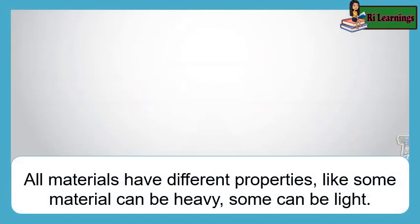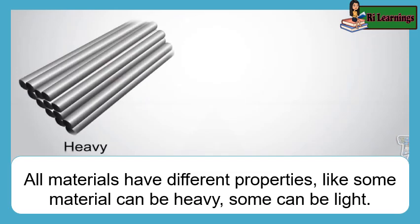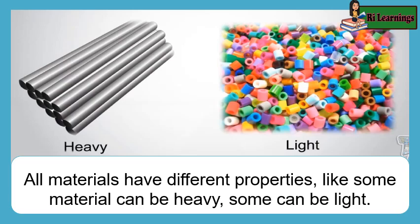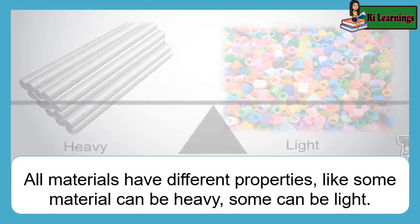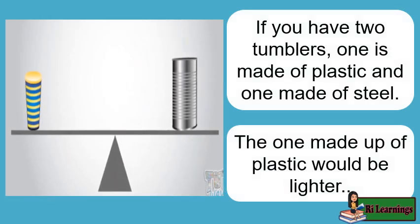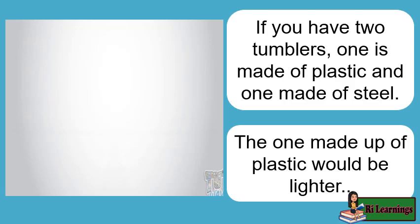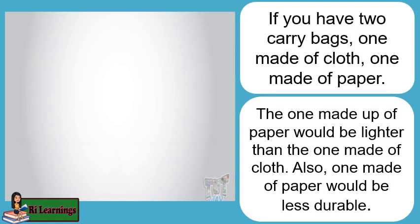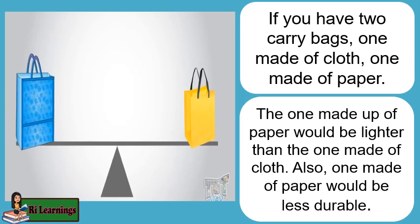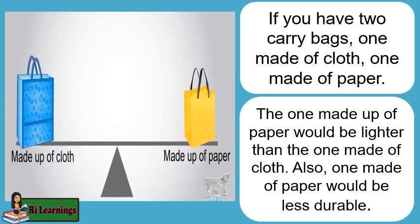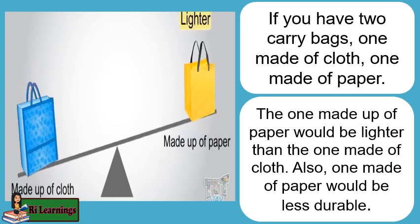All materials have different properties — like some material can be heavy, some can be light. If you have two tumblers, one made of plastic and one made of steel, the one made of plastic would be lighter. If you have two carry bags, one made of cloth and one made of paper, the one made of paper would be lighter than the one made of cloth. Also, the one made of paper would be less durable.